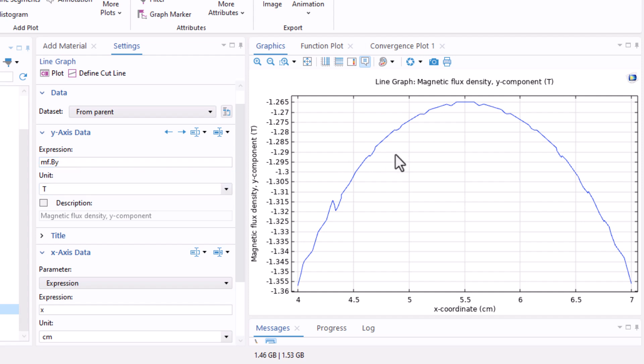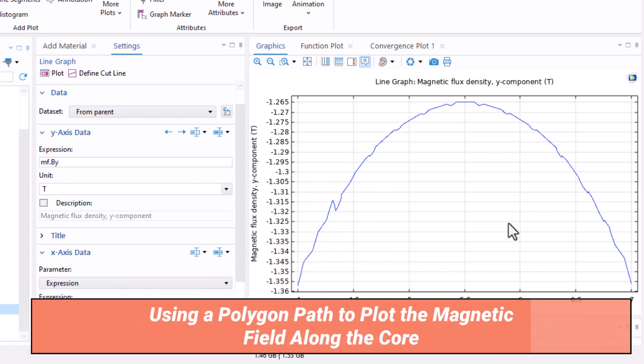Since the field is mostly along y direction, you will see that the central area actually has the highest By value and it decreases toward the sides. So both B and H vary within the core and they are not uniform.